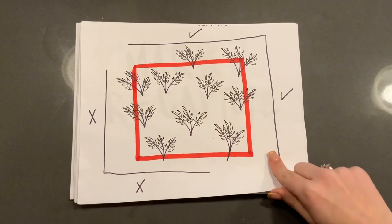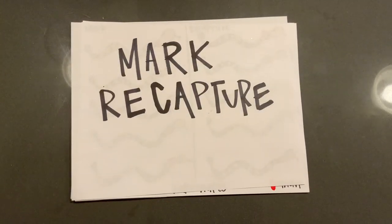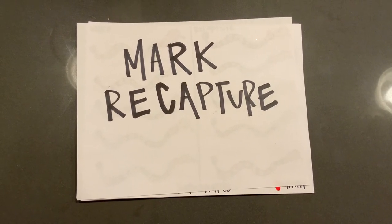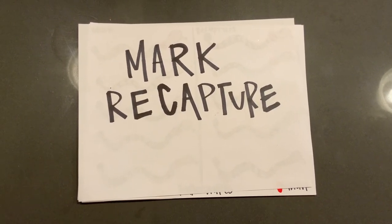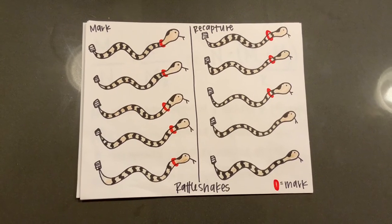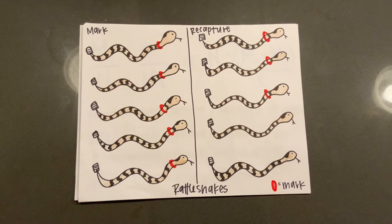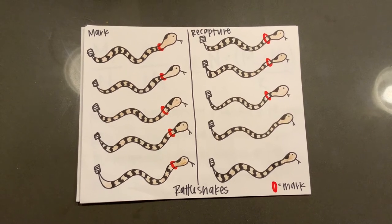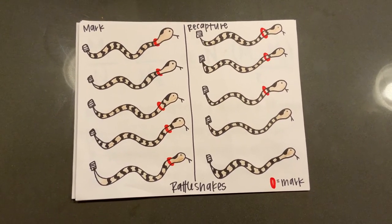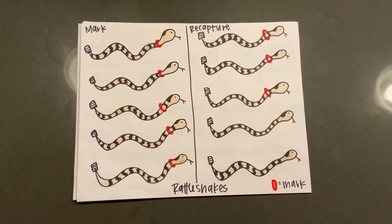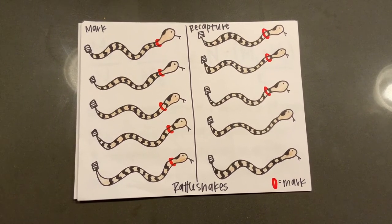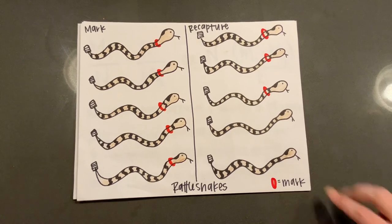Mark-recapture is another type of measurement process. This method is often used for mobile organisms that are not always visible, and it is good for shy animals that move around or are nocturnal. For this method, experimenters capture and mark a number of individuals, then release them. Experimenters then capture these individuals again at a later date, and the ratio of marked to unmarked individuals is used to estimate the population size.